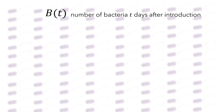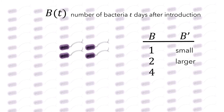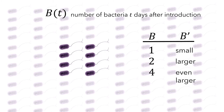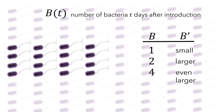Let's think about some values of b and how quickly b is growing. b' is the rate of change of the number of bacteria, and is measured in units of bacteria per hour. When there is just one bacterium, the number of bacteria is growing at a very small rate. The next hour, when there are two bacteria, the number is growing at a slightly larger rate. And when there are four bacteria, the number is growing at an even larger rate. As the number of bacteria increases, so does the rate at which this number grows. In other words, the rate at which the number of bacteria is growing is proportional to the number of bacteria.